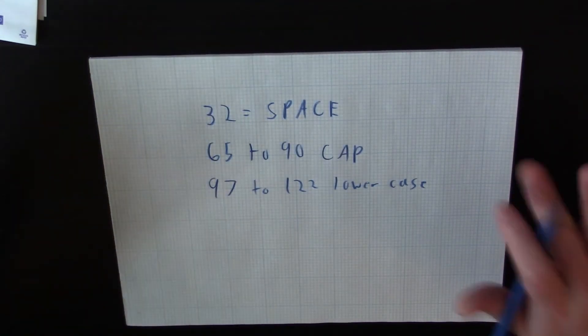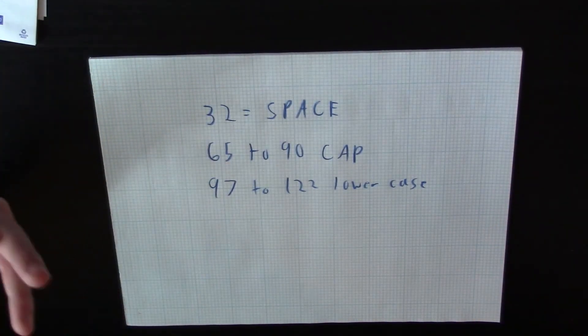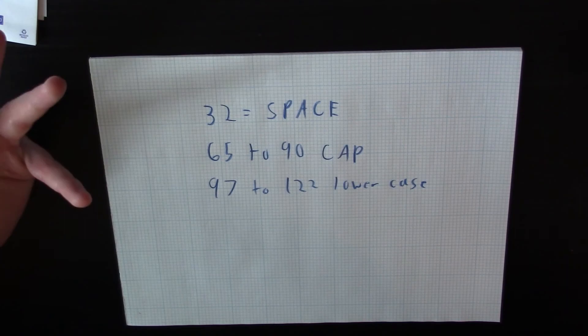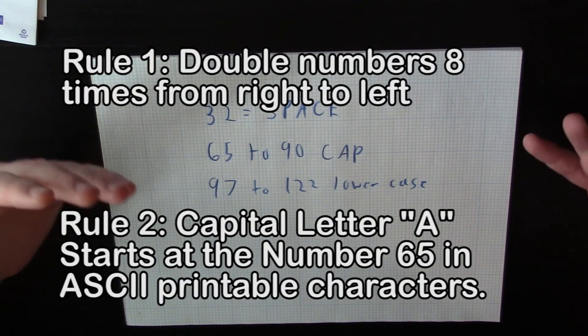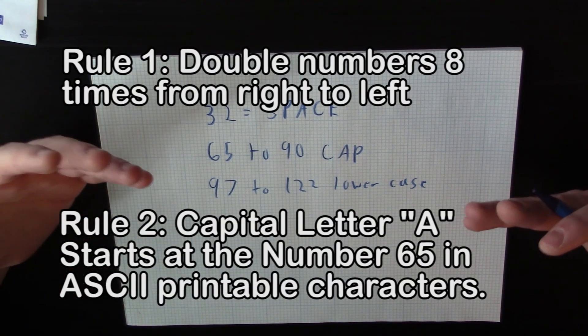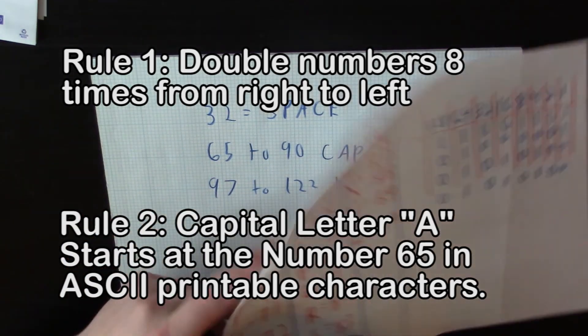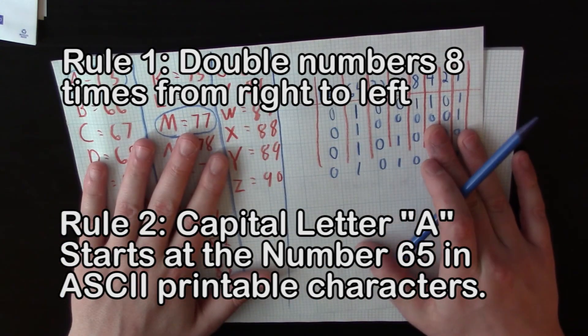And obviously you can look up the ASCII printable characters so you know what numbers represent what. However, memorizing the capital letters is the easiest way to do it and memorizing the two rules that I've given you today. And that's how you read and write binary. Until next time, have a great one.